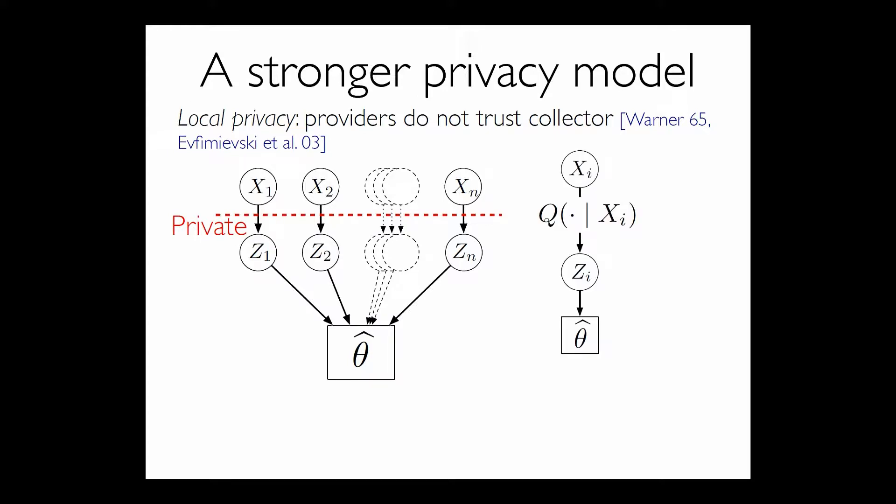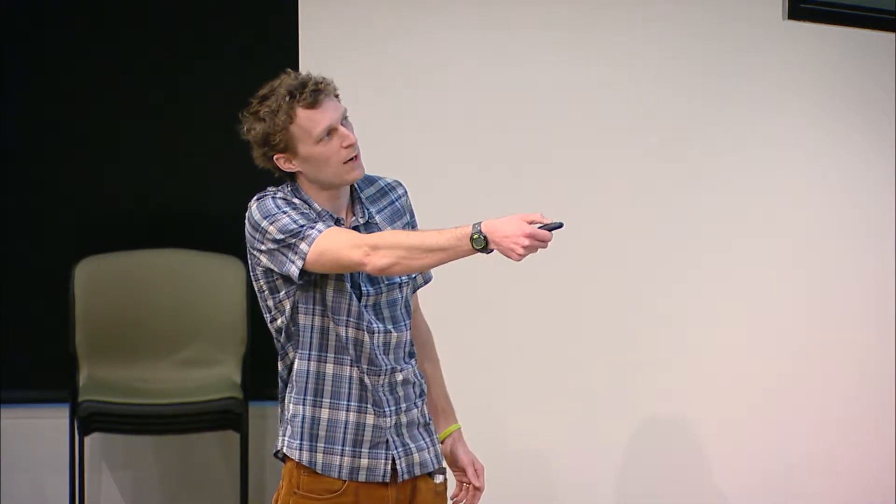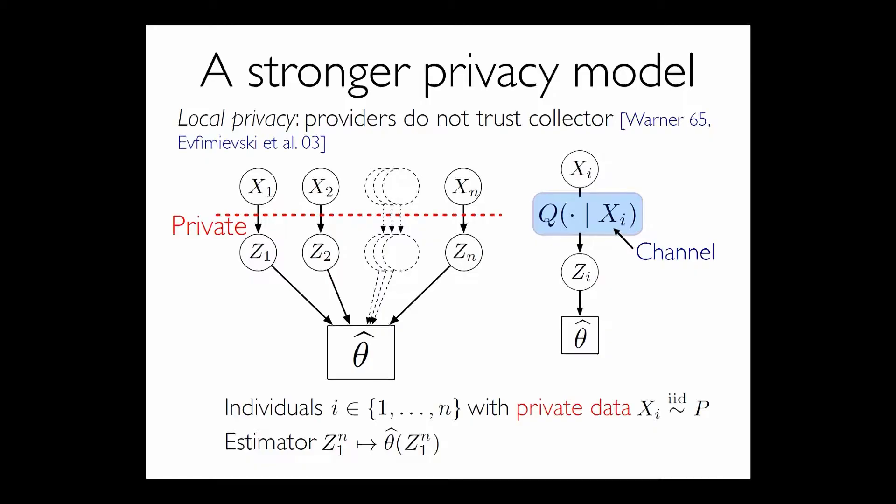And the way I'll think about this, because I'm an electrical engineer some days, what we do is we call this a channel or a noisy channel. We have x, it goes through some distribution, q, and out pops z. So we have individuals, they have private data, xi, from some population, and then we have some estimator that's a function of their privatized data.